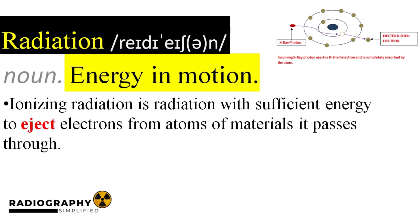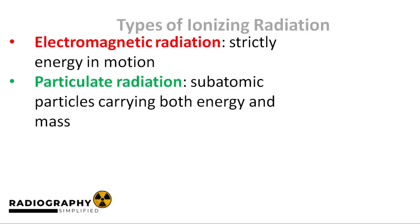The chemical reactions that the ion participates in are responsible for the biological damage that radiation causes. We'll hear more about this in coming sections. Ionizing radiation can be grouped into two types. The first is electromagnetic radiation. In electromagnetic radiation, only energy is in motion, and it is transmitted at the speed of light. In the case of particulate radiation, energy is still transmitted, but this time mass is carried along with the energy.